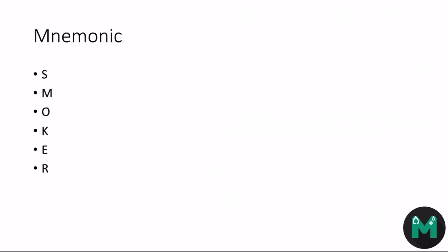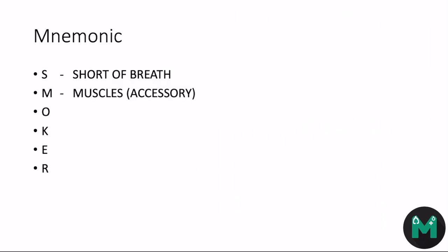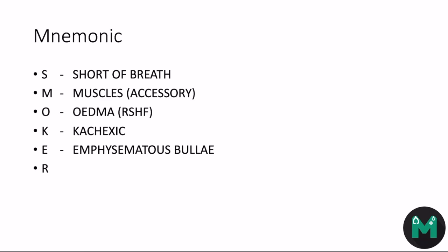A mnemonic to help you remember the key signs is SMOKER: S for short of breath; M for muscles, as in using accessory muscles; O for edema, a sign of right-sided heart failure; K for cachectic (spelled with a K); E for emphysematous bullae, which can result in hyper-resonant percussion and reduced breath sounds; and R for raised JVP.